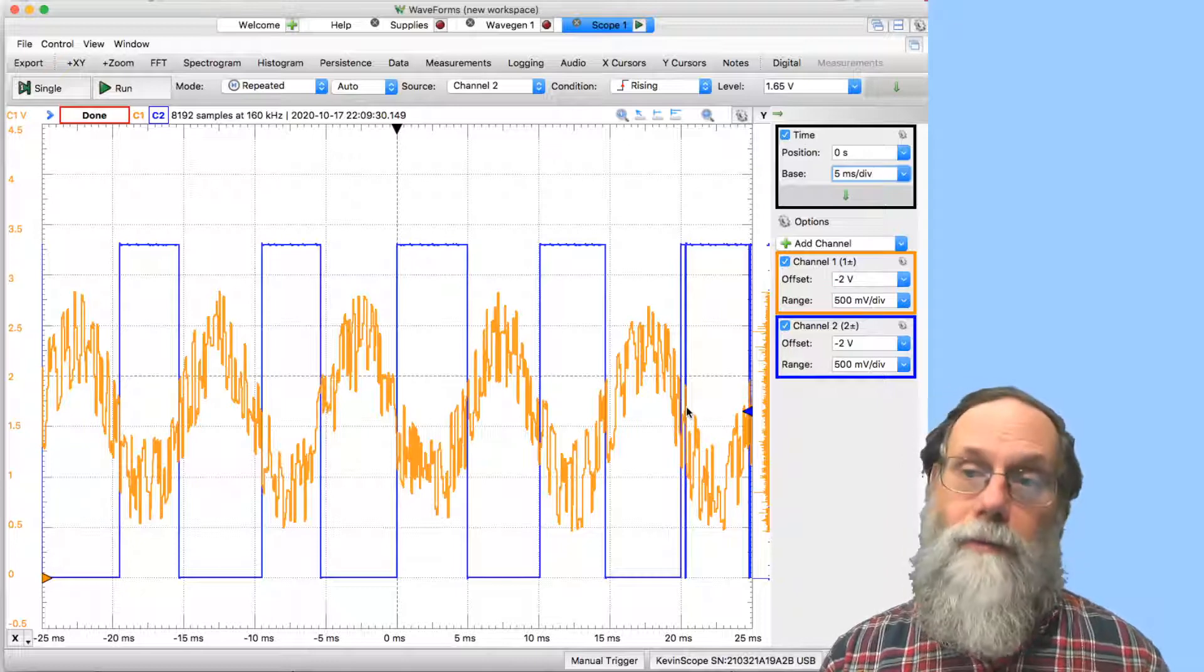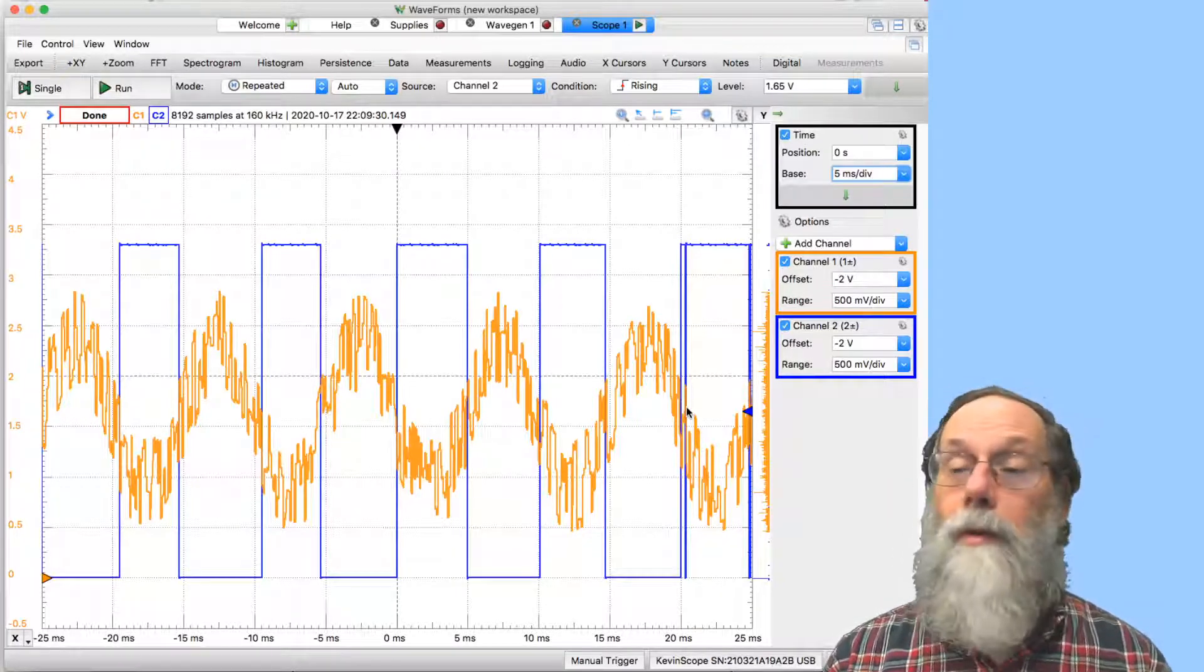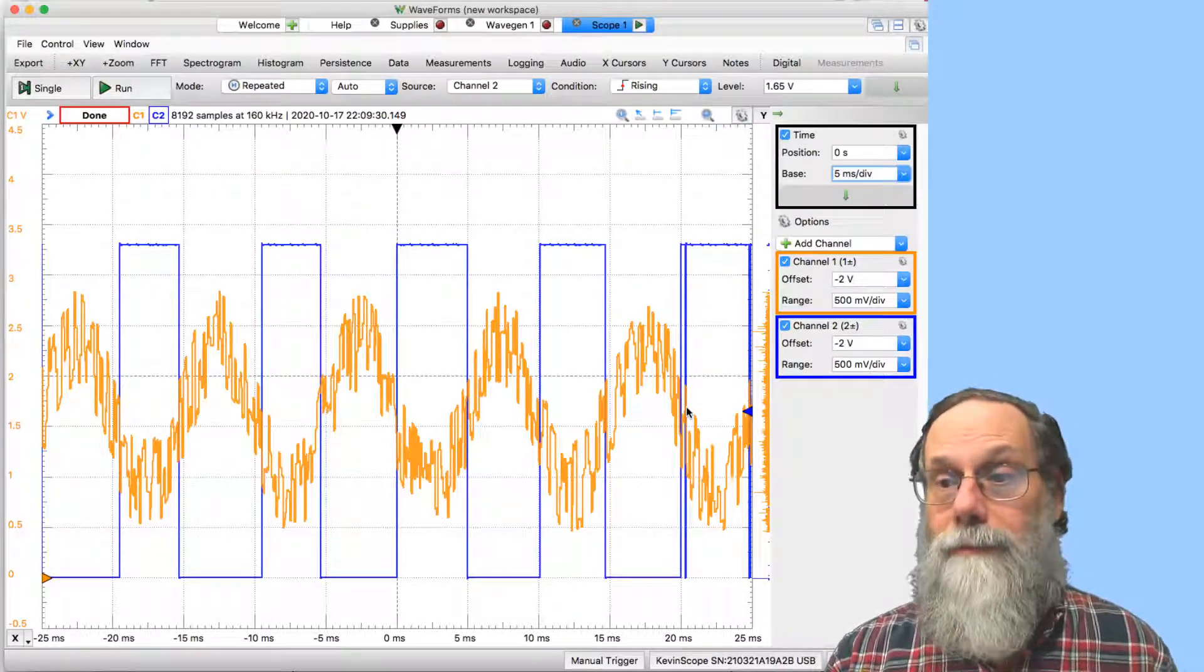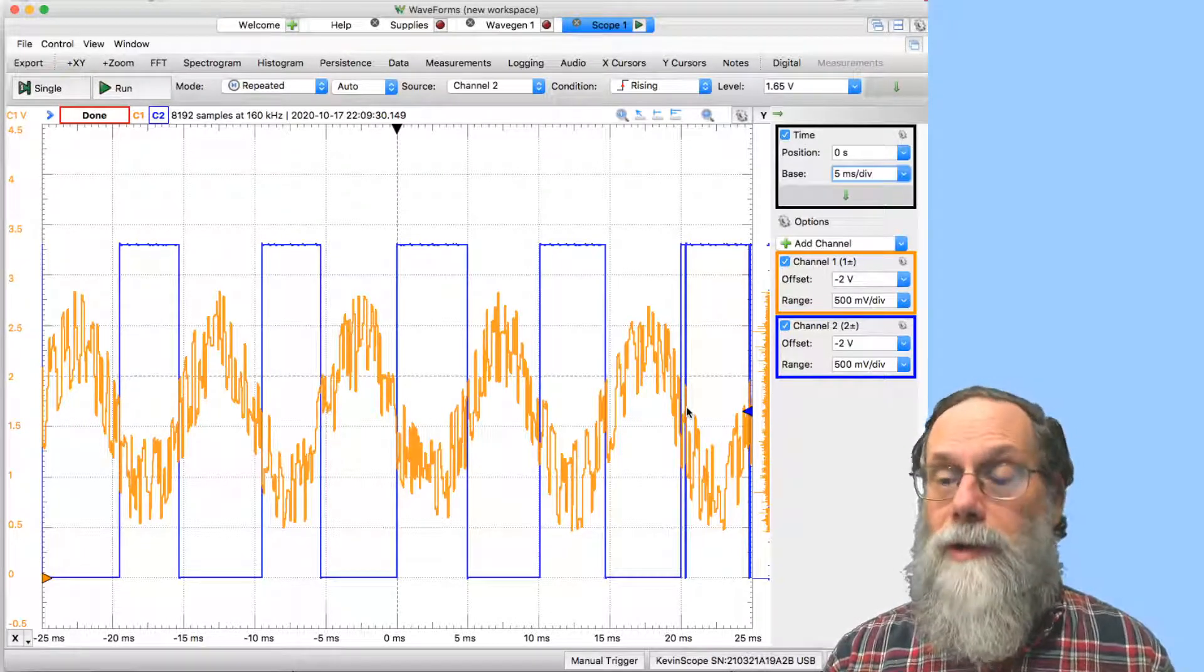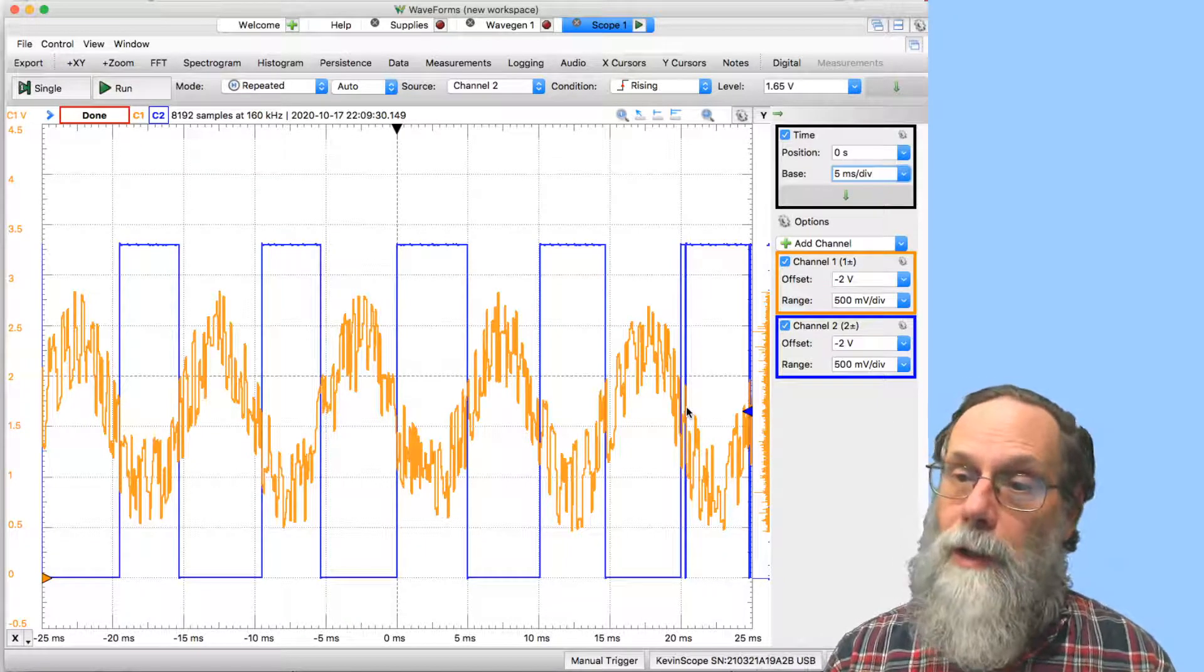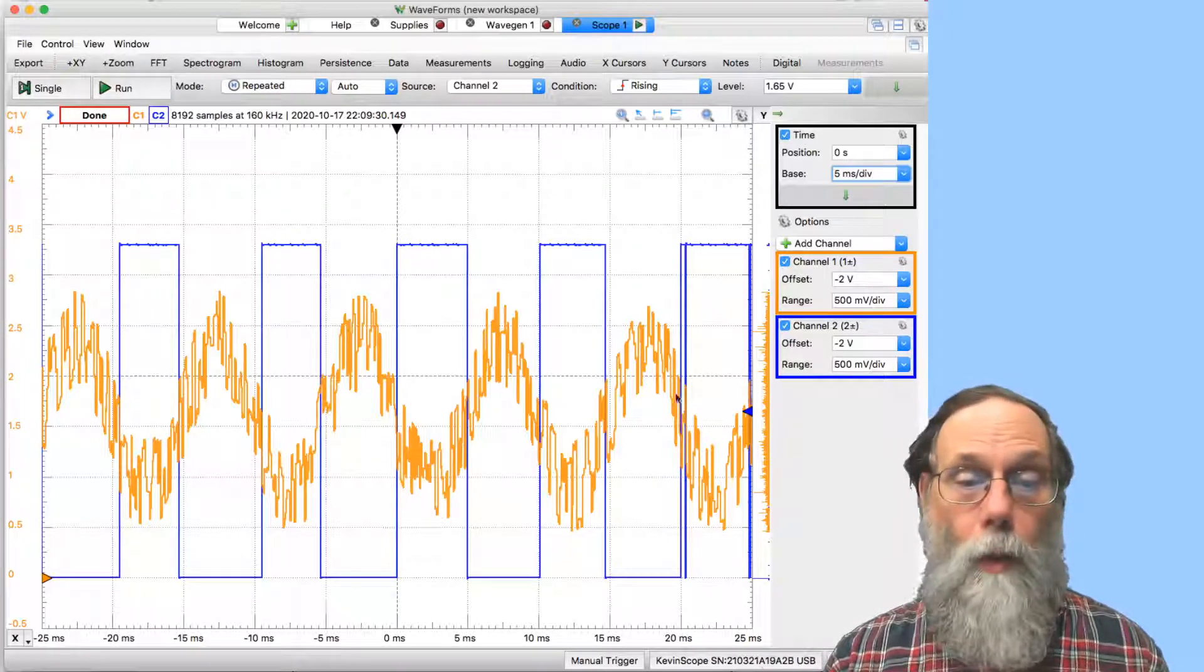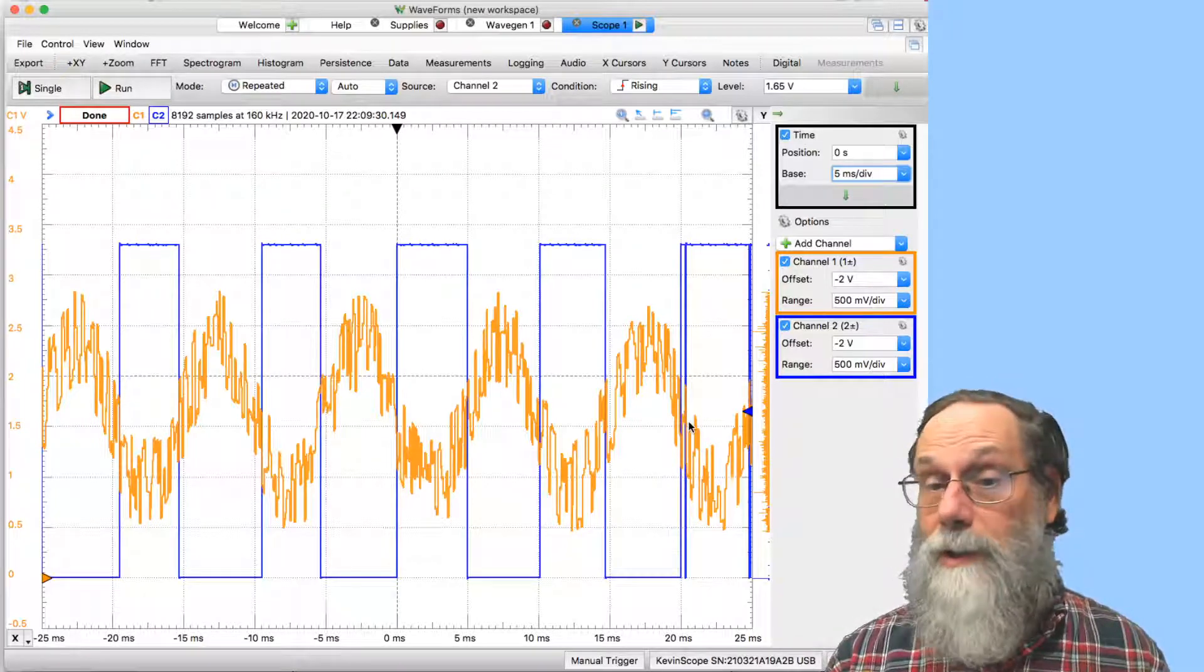And if we stay below the hysteresis voltage and the noise, we don't get any extra transitions. And that's really what the Schmidt triggers are designed for. That's what they're used for in most circuits is to take a noisy signal and turn it into a clean digital signal without extra transitions because of noise.